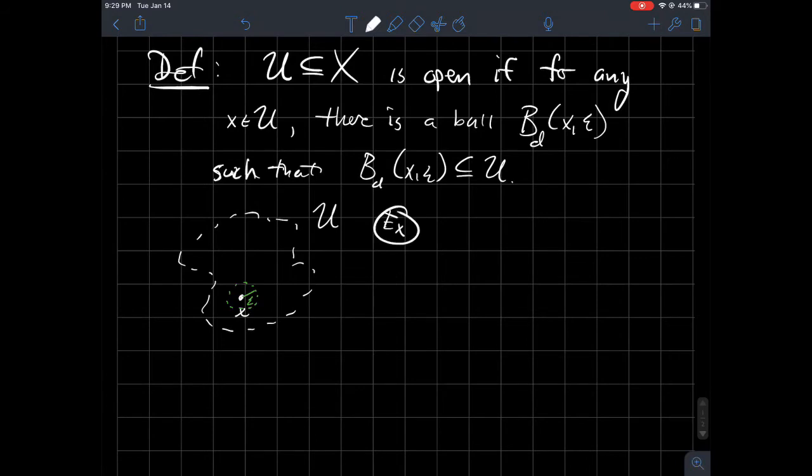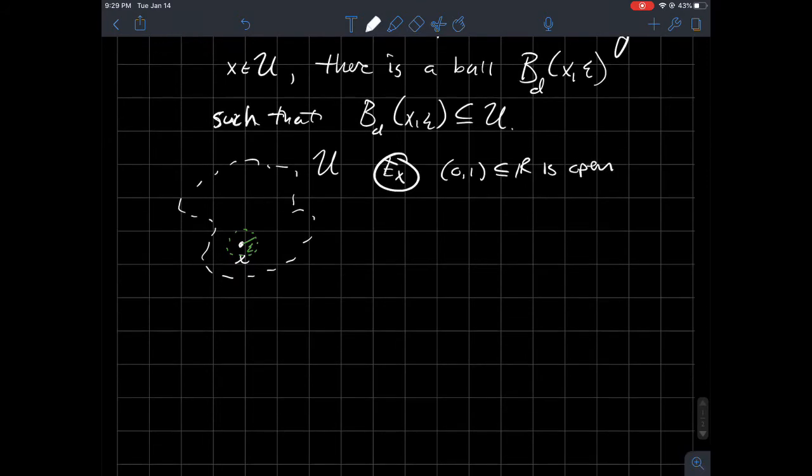So to give you an idea again, that's a picture of what open is. So for some examples here, something like (0, 1) in R, if I'm using the usual metric - so like the absolute value - (0, 1) is open. So how come?